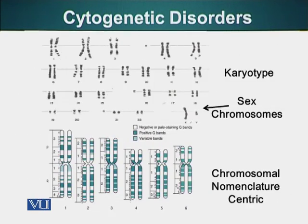Here is a karyotype. You can see that we have 46 chromosomes. Out of these 46 chromosomes, 44 are autosomes, meaning these chromosomes do not carry any genetic information that plays any role in sexual differentiation. The sex chromosomes are X and Y. Men have one X chromosome and one Y chromosome, whereas females have two X chromosomes.